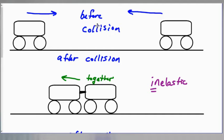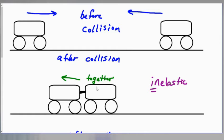As a refresher from the previous video, we've got a couple of cars here. The one on the left is moving towards the center, and the one on the right is moving towards the center — that's before the collision, and they both have momentum. After the collision, the two cars were stuck together. Maybe the bumpers stuck together, or if they're trains, trains have a little connector that snaps in place. So that was inelastic — we didn't give a word to it at the time, but that was inelastic.